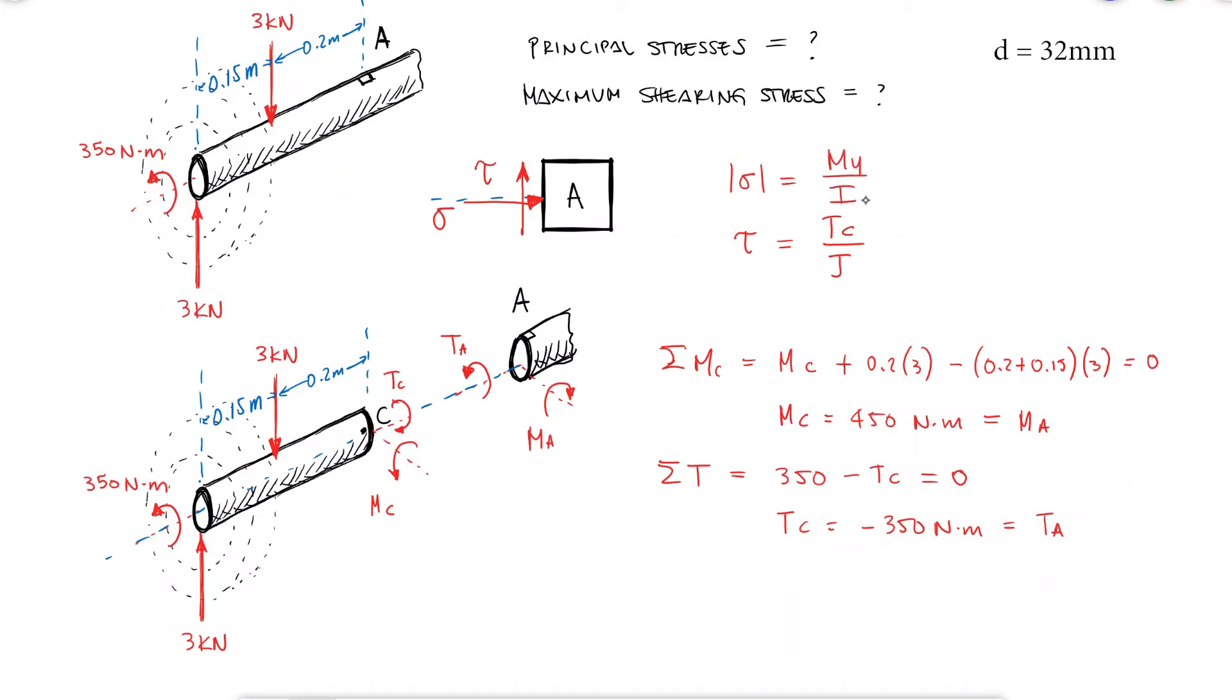Notice that I'm using the absolute value because I already identified that the stress is compressive. If I assume the stress to be positive and keep the negative sign from the MY over I equation, we would end up with the same values. The shearing stress is therefore 54.4 MPa, and the compressive normal stress would be 140 MPa.